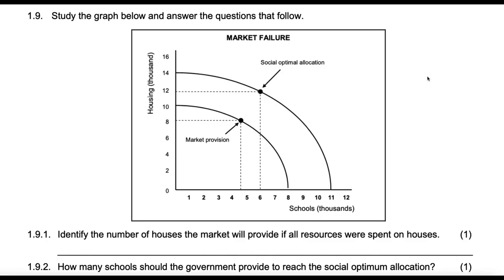I'll start by defining market failure. Market failure is the failure of markets to allocate resources at an optimum level. Markets have a tendency of undersupplying merit goods and oversupplying demerit goods, and for that reason government should intervene accordingly — to bring up or influence consumption of merit goods and discourage consumption or supply of demerit goods, because free operating markets will oversupply these regardless.